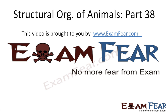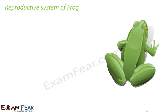Hello friends, this video on structural organization of animals part 38 is brought to you by examfeo.com. This is the last but not the least topic: the reproductive system of the frog. Reproduction is something very important for all living organisms, and so it is for frogs. The frog is dioecious, meaning they have separate sexes — a separate male frog and a separate female frog with different organs.